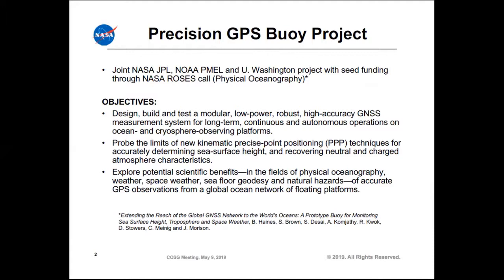GNSS refers to the overall satellite constellation, which could include Chinese, Russian, and European systems. We want to move away from campaign-style buoy measurements and ensure data gets back in near real time, for both ocean and cryosphere applications. There have been a lot of advances in precise point positioning in the last decade that allow us to determine sea surface height of an isolated buoy from reference stations. We also want to explore potential scientific benefits in physical oceanography, weather — measuring precipitable water from the buoy accurately, with important implications for forecasting atmospheric rivers — and also space weather, including ionospheric measurements and potentially transient traveling ionospheric disturbances, which have been used for seismic purposes.